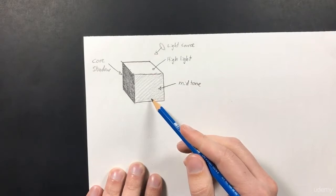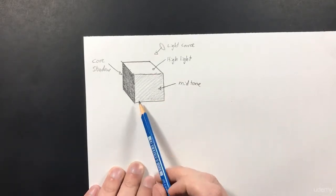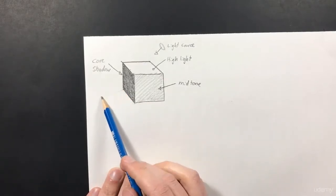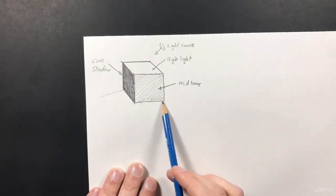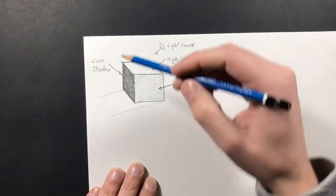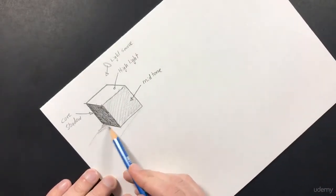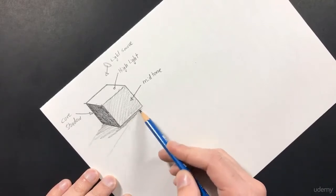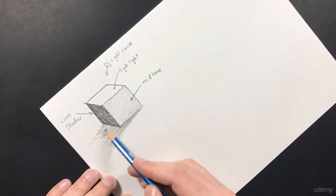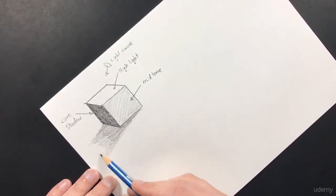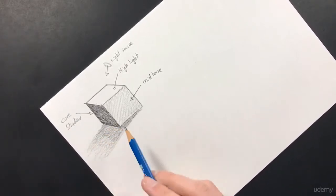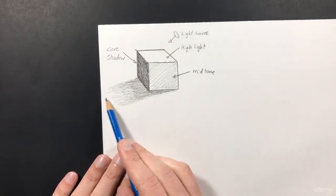There's one last shadow we have to add before it's complete — the cast shadow. A cast shadow is simply a shadow cast off of our shape and onto the surface it's sitting on. It comes off like so, and we fill that in with a darker value. We usually want our cast shadow to be darker than our mid-tone shadow, and the further away we get from the object, the lighter our shadow becomes.